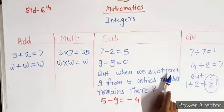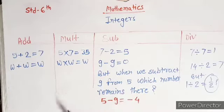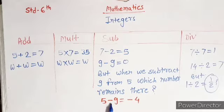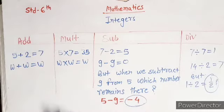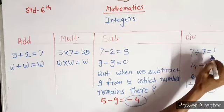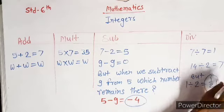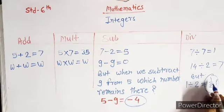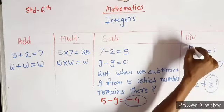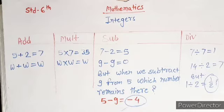But when we subtract 9 from 5, which number remains? 5 minus 9 is equal to negative 4. But negative 4 is not available in the group of whole numbers. So for division, 14 divided by 2 equals 7, but 1 divided by 2 creates a problem. Negative 4 is not available in a group of whole numbers, so we need another type.